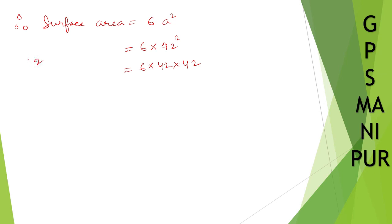6 × 42 × 42. Calculating: 42 × 42 = 1764, then 6 × 1764 = 10584 cm². I hope the answer is correct.